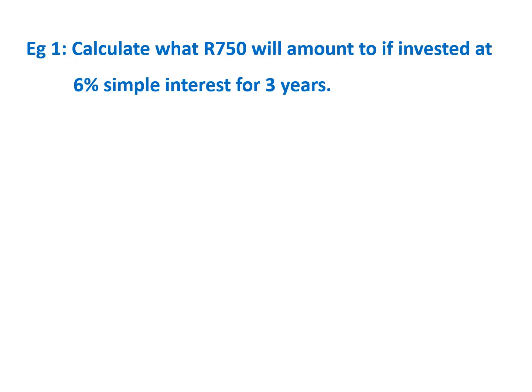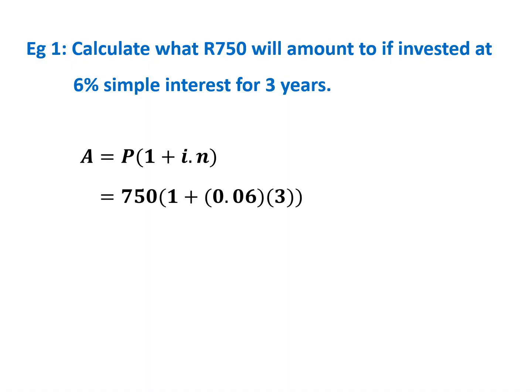Calculate what 750 rand will amount to if invested at 6% simple interest for three years. In financial maths, always start by writing down your formula. We want to find A — how much will be in the bank account at the end of three years. P is 750. I is 6 divided by 100, which equals 0.06. N is 3. Type it in exactly as you see it, and your answer will be 885 rand.